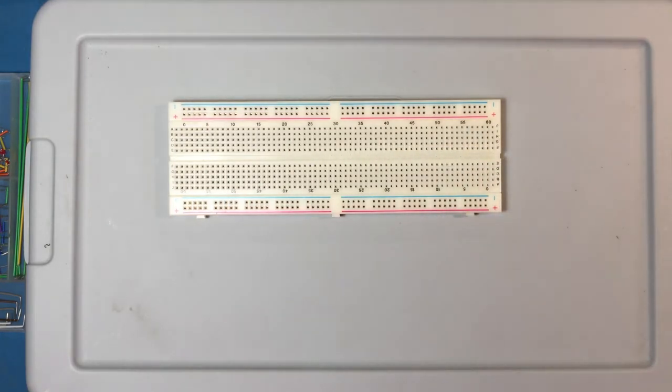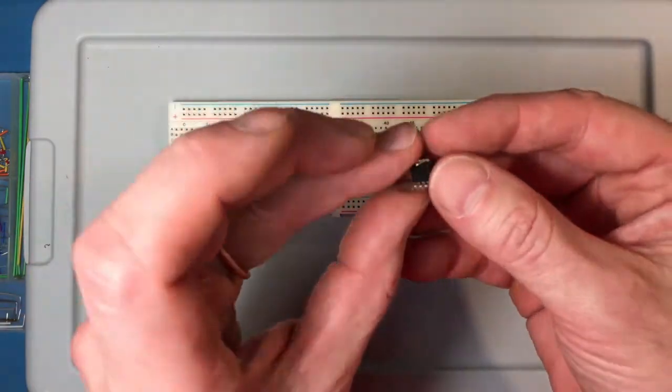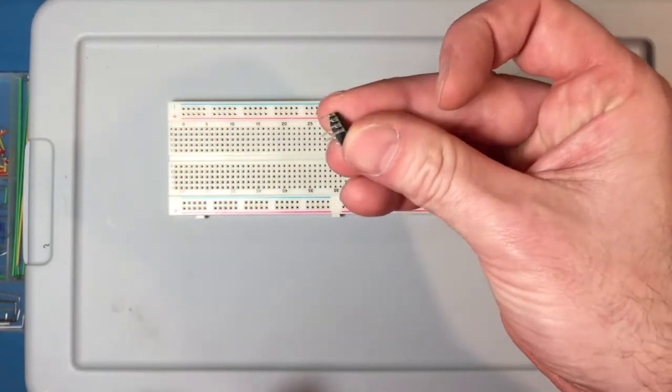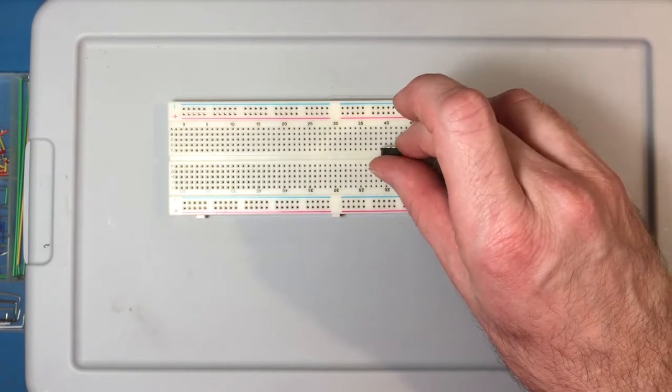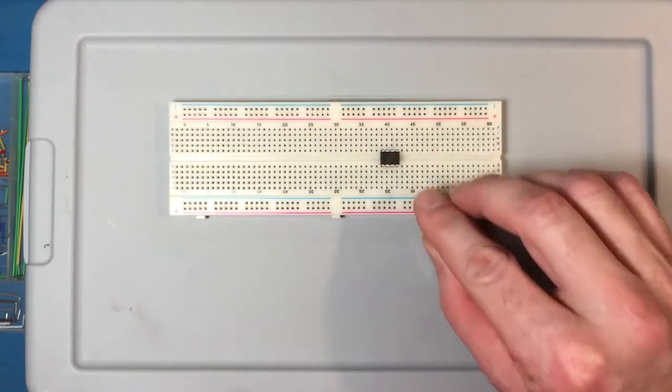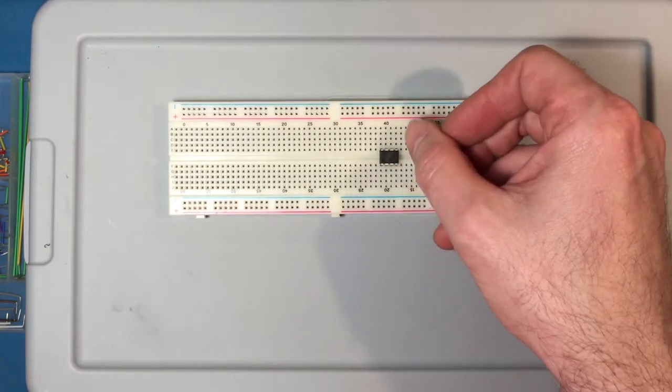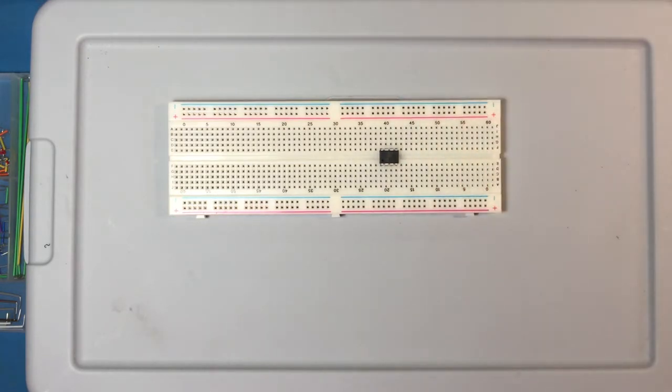And the reason there's no connection is because if you have things like op-amps, which look like this right here, you can see there's eight legs on there. If we plug that op-amp into the breadboard, now the pins on this side are isolated from the pins on this side, and that allows us to do what they call fanning out the pins.